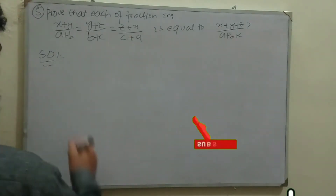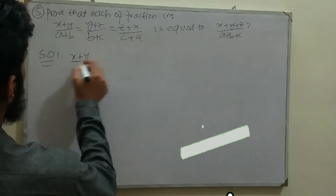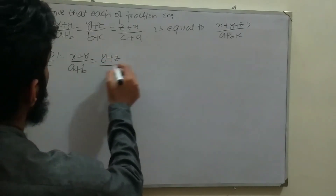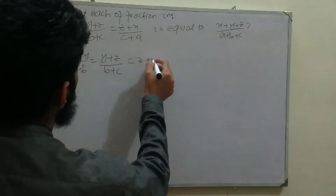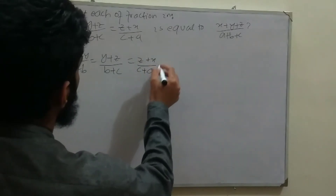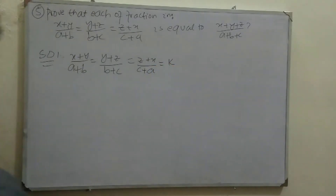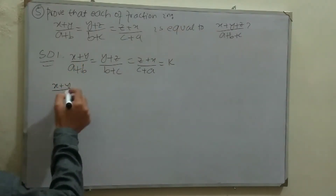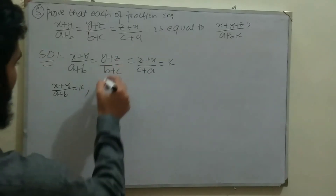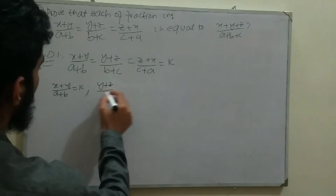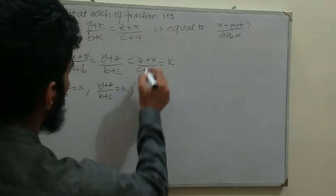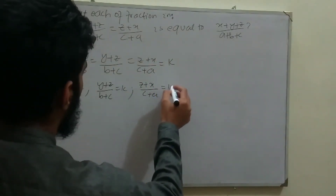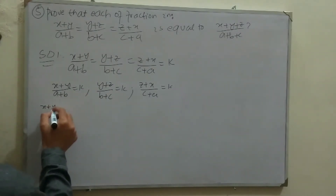Solution: Using the K theorem, which we started in Exercise 3.4. Let (x+y)/(a+b) = (y+z)/(b+c) = (z+x)/(c+a) = k. So taking x+y over a+b equals k, also y+z divided by b+c equals k, and z+x divided by c+a equals k.